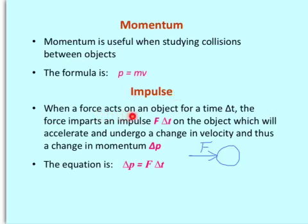When a force acts on an object for a time delta t, the force imparts an impulse equal to force times time on the object like what's shown here. And this object will accelerate and undergo a change in velocity and therefore a change in momentum. Delta means change, delta p. And delta p or change in momentum is equal to the impulse given.